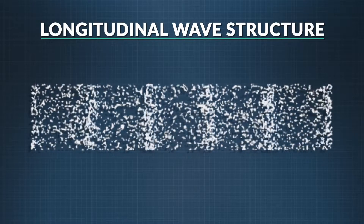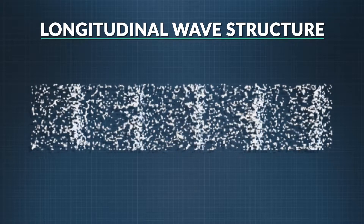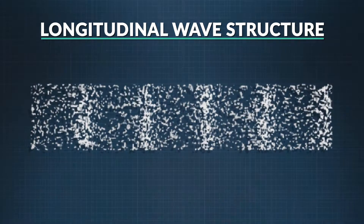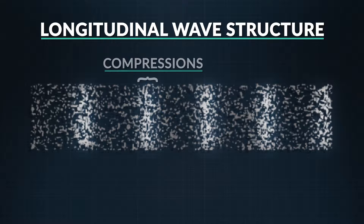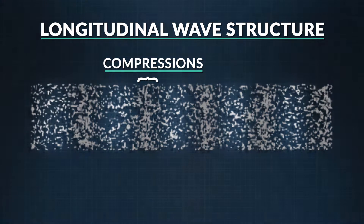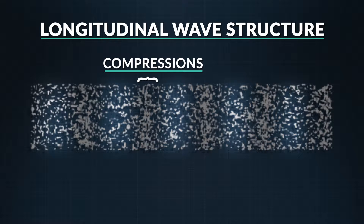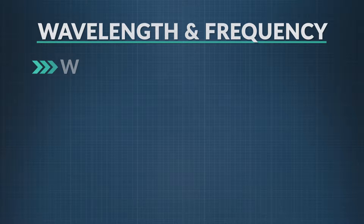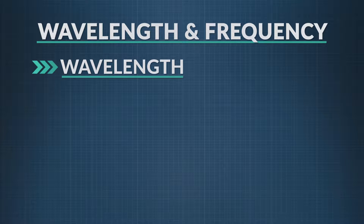Now let's look at the architecture of a longitudinal sound wave. The energy causes variations in pressure that makes molecules band together in some areas, creating areas of high pressure called compressions. We call the low pressure areas of the wave, where the particles are farthest apart, rarefactions. To measure a wavelength, which we do in meters, we measure the distance between two waves that include one full compression and one full rarefaction.